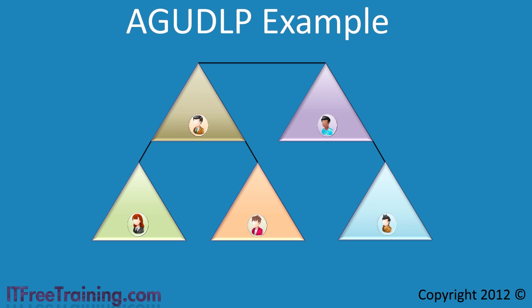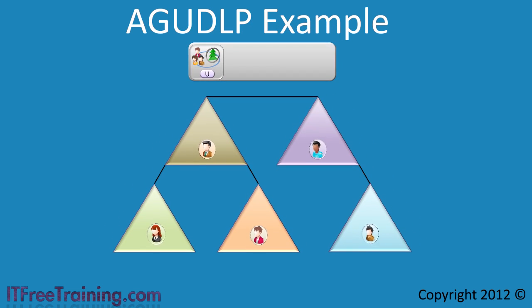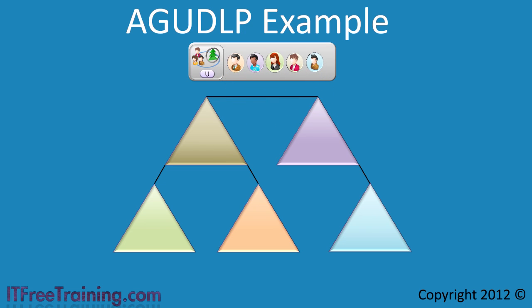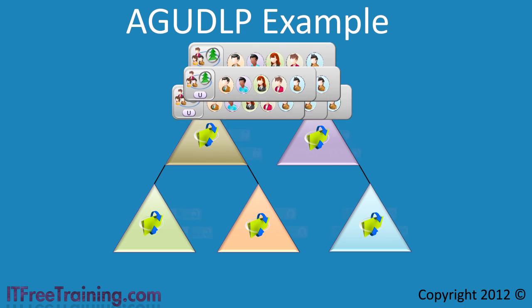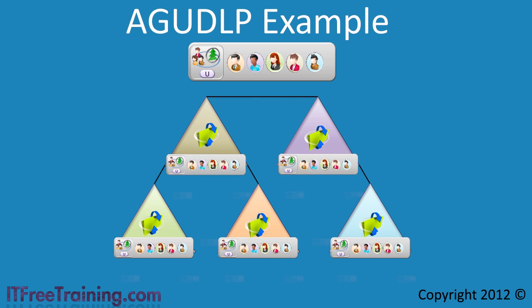The easiest way to achieve this would be to create a universal group and put all the top sales people in it. This universal group would be applied to all the shares in all the domains, giving all the top sales people access to the data they need. However, there are a number of problems with this approach.